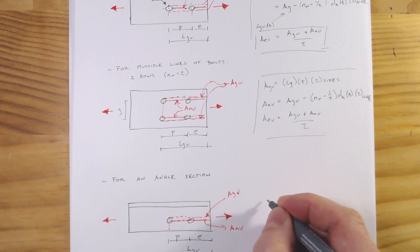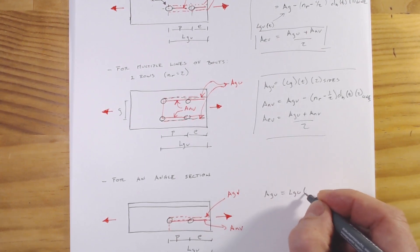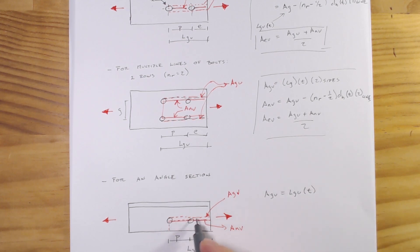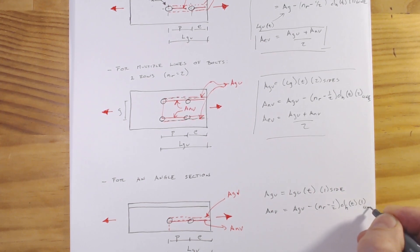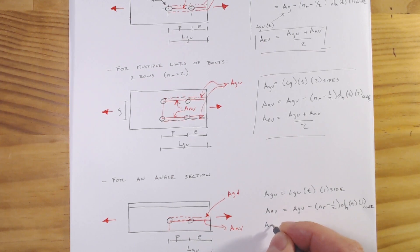And we'll just write these down quickly just so you have them. A_GV equals L_GV times thickness, so it's just simply that area here, times one side. Our net area, A_NV equals A_GV, which is simply this line, minus N_R minus one half d_h times T times one line. And our effective area here is going to be A_GV plus A_NV over two.